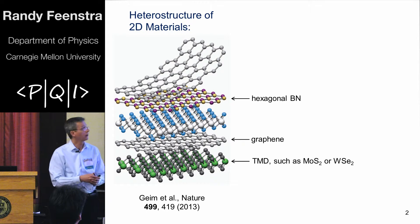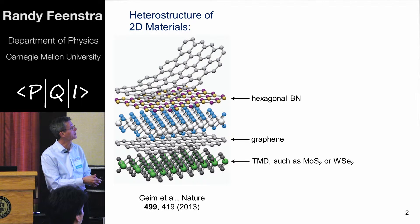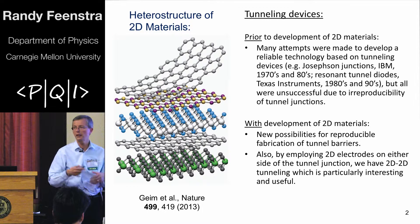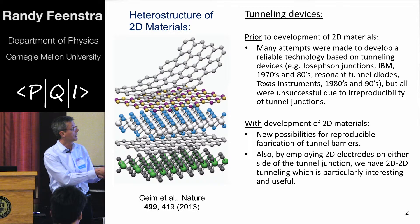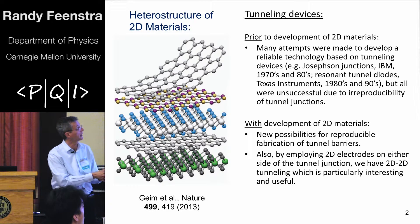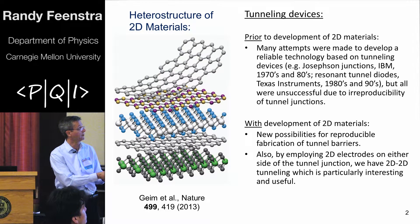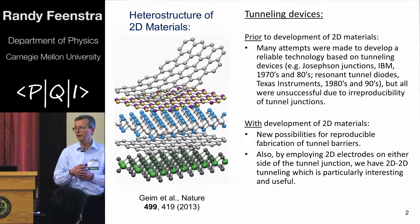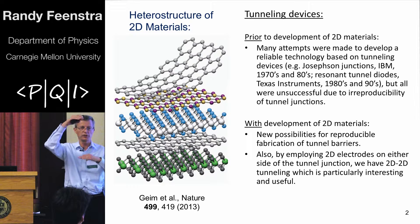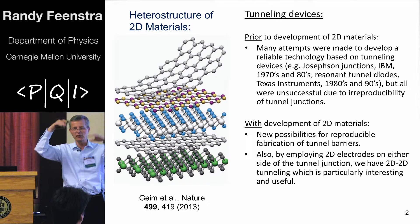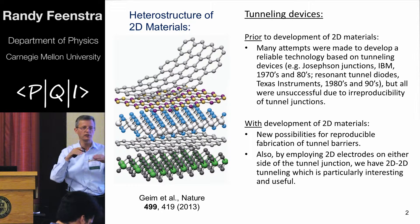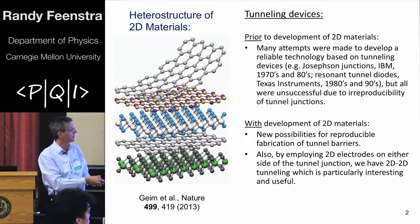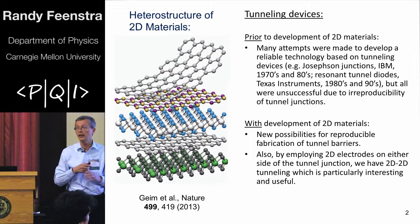Why is my group interested in these? We're particularly interested in tunneling devices. Historically there's been a number of attempts to develop electronic technology based on tunneling devices — IBM in the 70s and 80s with their big Josephson Junction project, then Texas Instruments and others in the 80s and 90s with resonant tunnel diodes. But they were all unsuccessful on a large scale because of irreproducibility in the tunneling, since tunneling is so sensitive to the thickness of the barrier. With 2D materials we have a new possibility for truly putting down one monolayer at a time.